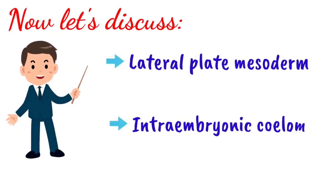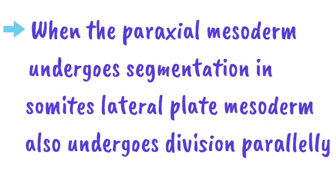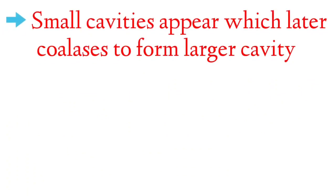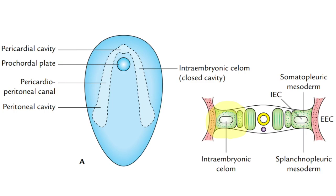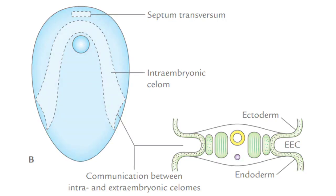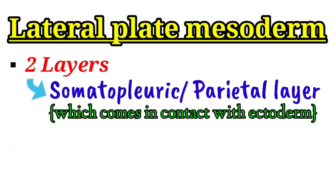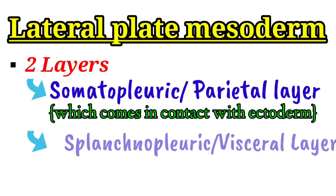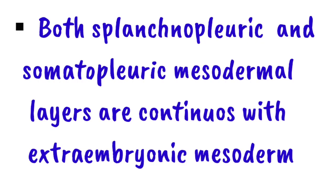When the paraxial mesoderm undergoes segmentation into somites, changes also occur in the lateral plate mesoderm: small cavities appear and coalesce to form one large horseshoe-shaped cavity called the intraembryonic coelom. This cavity is initially closed but later opens to communicate with the extraembryonic coelom, at which point the lateral plate mesoderm differentiates into the somatopleuric (parietal) layer contacting the ectoderm and the splanchnopleuric (visceral) layer contacting the endoderm.